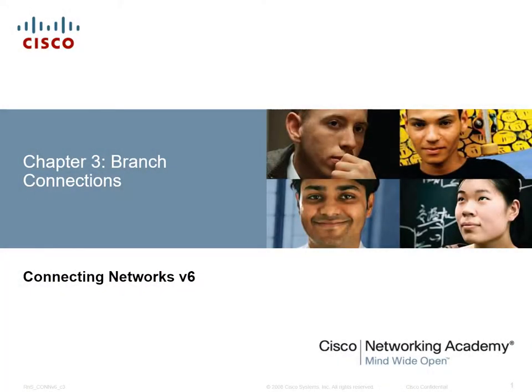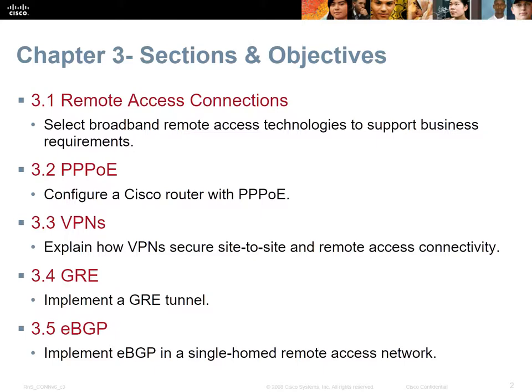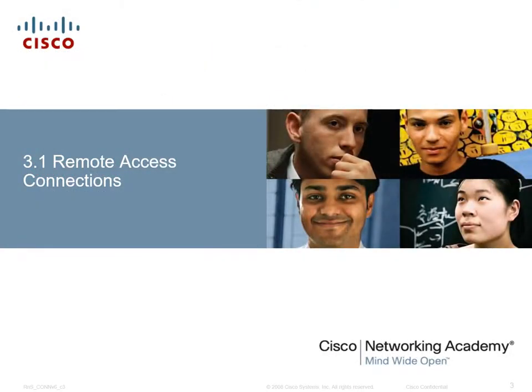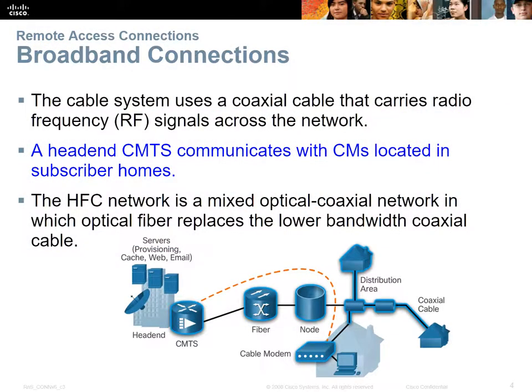Welcome back to CCNA Connecting Networks version 6, chapter 3: branch connections. Chapter 3 is quite a large chapter with five major concepts. If it was up to me this probably would have been two chapters, because PPPoE, VPNs, GRE, and BGP are very big concepts. At the CCNA level we're just doing a basic introduction; we have to wait until CCNP for a much deeper dive. We'll start off with remote access and broadband connections.